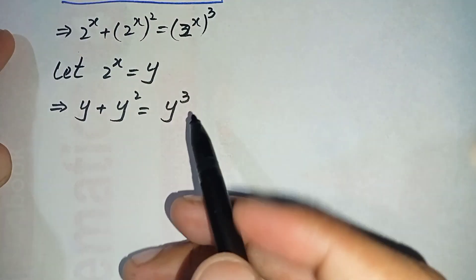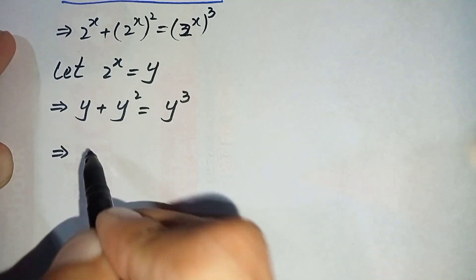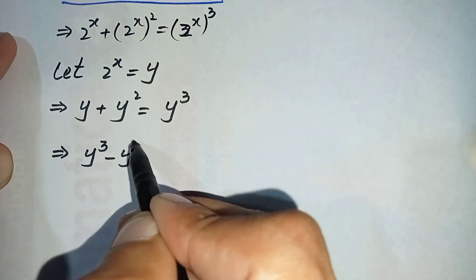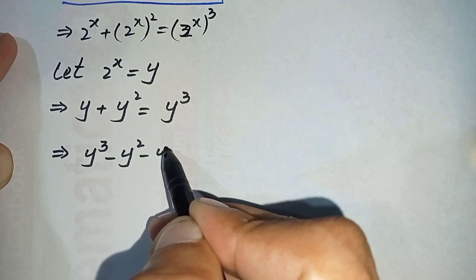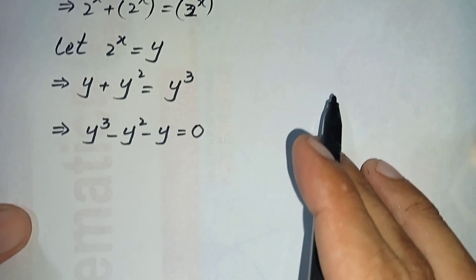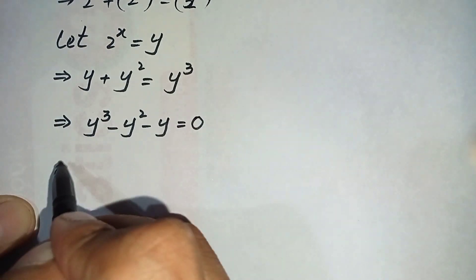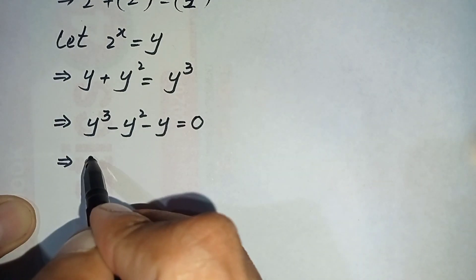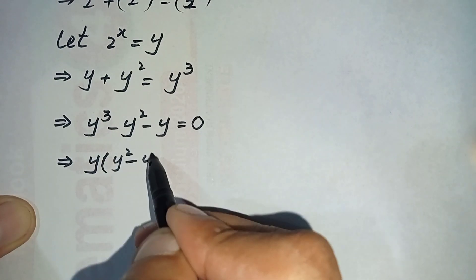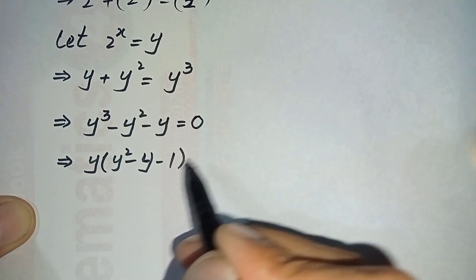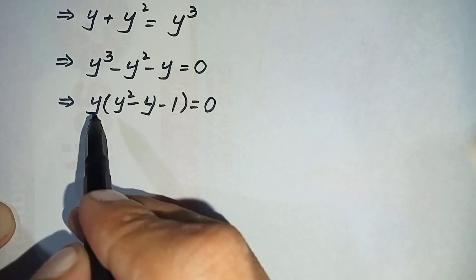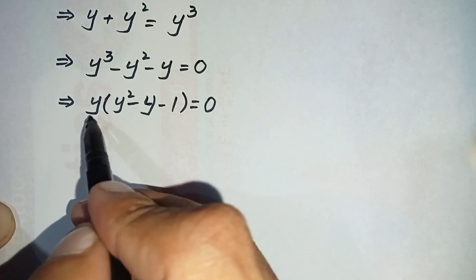Next, we move these two terms to the right-hand side, so the left side becomes 0. This gives us y cubed minus y squared minus y is equal to 0. We then take y common from these three terms.